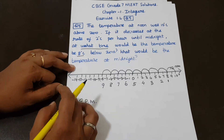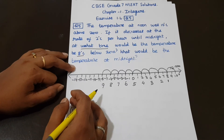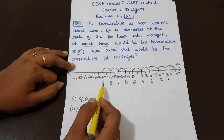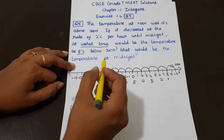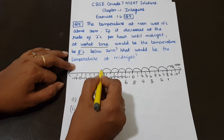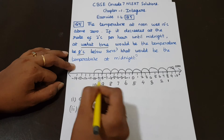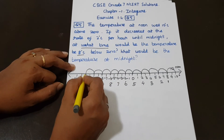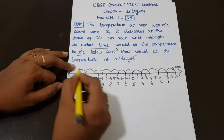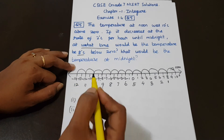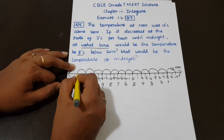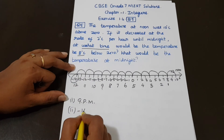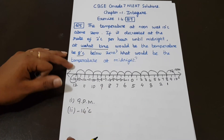What is the temperature at midnight? Midnight means 12 o'clock. We have reached up to 9 o'clock, now let's see up to 12 o'clock. At 10 o'clock: decrease by 2. At 11 o'clock: decrease by 2. At 12 o'clock: decrease by 2. So at 12 o'clock midnight, the temperature is minus 14 degree Celsius.